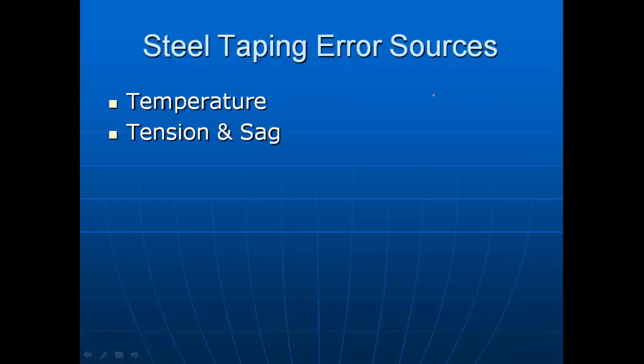The tension in the tape and the sag in the tape also have an impact. If you hold a hundred-foot steel tape up so none of it touches the ground, it will sag in the middle, pulling the ends closer together — that is an error source. Tension can help eliminate some of that sag, but tension can also cause stretch in the tape.